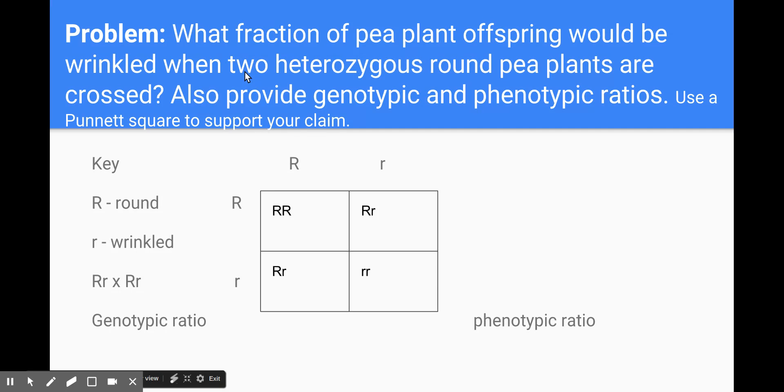The question stem tells us that we have two heterozygous round pea plants. I know that round is dominant to wrinkled because it's the heterozygous offspring that are displaying the round phenotype. According to Mendel's law of dominance that must mean that round is dominant to wrinkled. So here are the genotypes for the parents. Big R little r being crossed by big R little r.